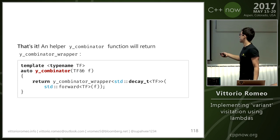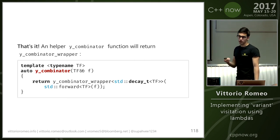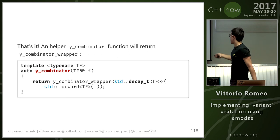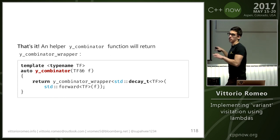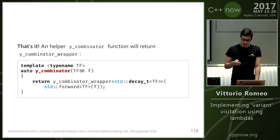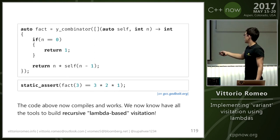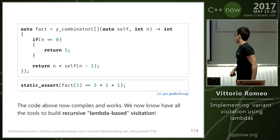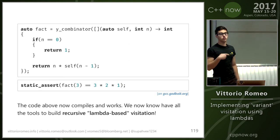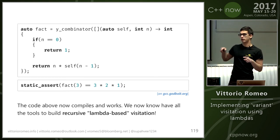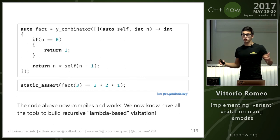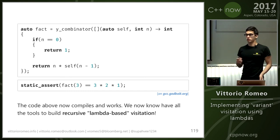The only thing we need is a y_combinator function that deduces the types of the lambdas, forwards them to the constructor, and uses decay_t to get rid of both const and reference qualifiers — just the usual make_xxx function that deduces the template argument. This is constexpr-friendly by default and just works. Now that we have this, we have the tools to build recursive lambda-based visitation, because the original issue was having no way to refer to the visitor inside the body of one of the branches. If we use Y Combinator to wrap it, we can refer to it on the spot.